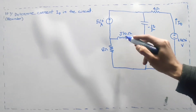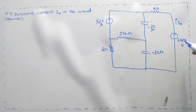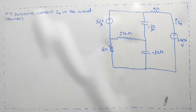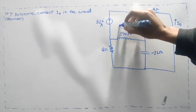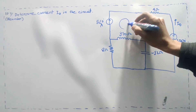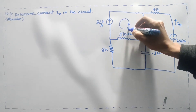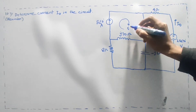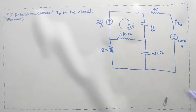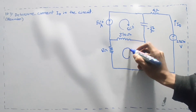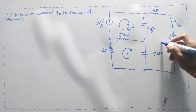The current is 5 angle 0 degrees. The rotation is 5 angle 0 degree. So this is the current i1 and i2.